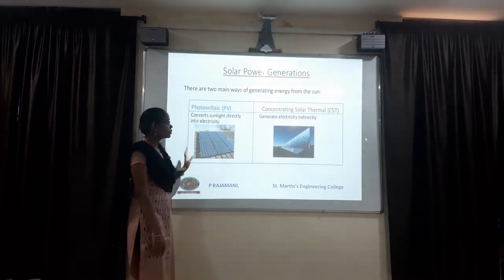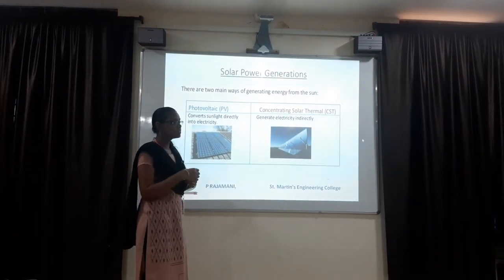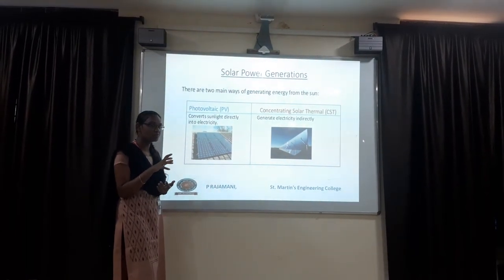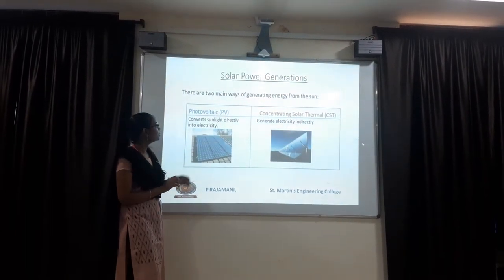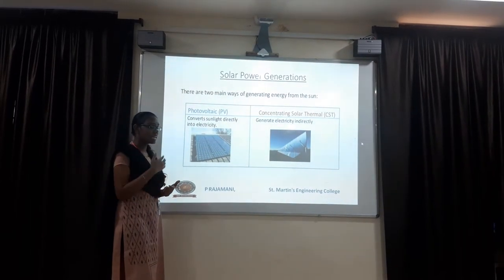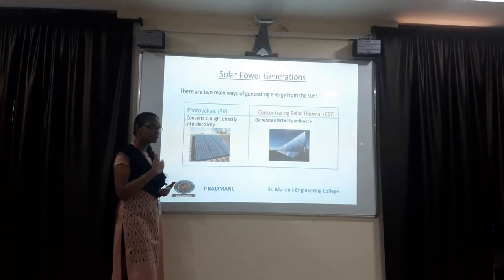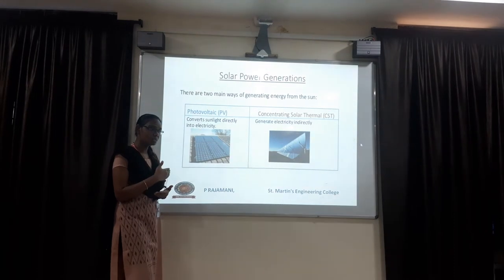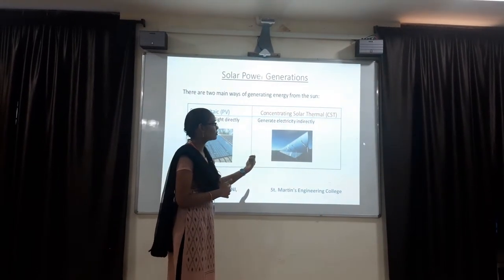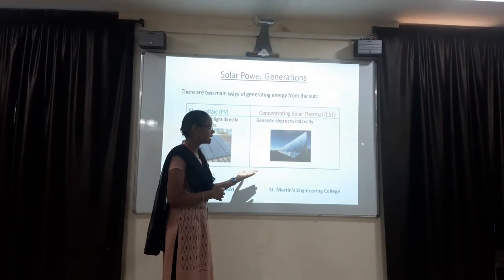There are two main ways of generating energy from the sun. First one is photovoltaic. Photovoltaic means we are getting electrical energy from the sun. It is directly connected from the sun to the absorber body. Second, concentrating solar thermal energy system - this is the indirect method.